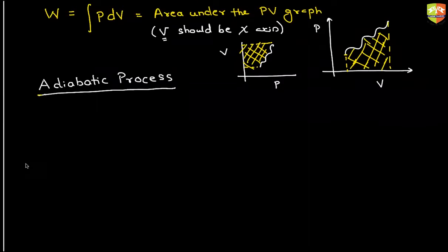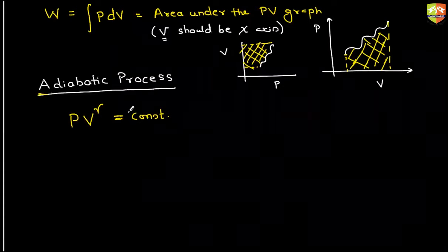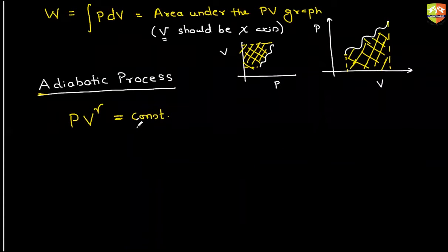So adiabatic process. Just like we have started the isothermal process with the process equation, and that process equation was pressure into volume should be constant, in case of adiabatic process pressure into volume raised to power gamma is constant. There is a full mathematical derivation of this, let's not get into all that right now. So PV raised to power gamma is constant, where gamma is the ratio of molar specific heat of the gas CP by CV.